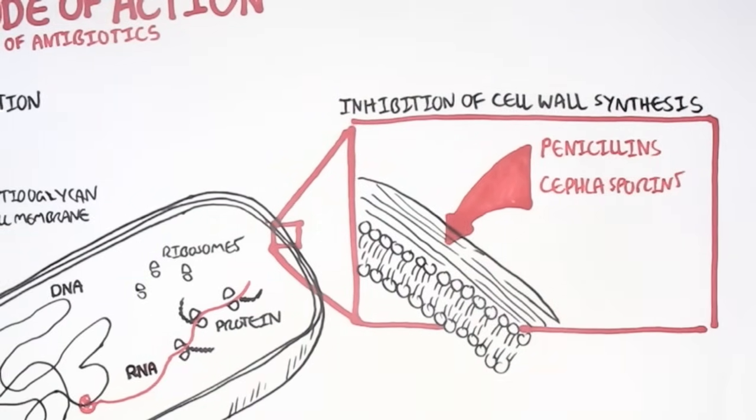All these drugs have different mechanisms of action when it comes to inhibiting cell wall synthesis. A good thing about these drugs is that they won't affect human cells because human cells do not have peptidoglycans. We do not have cell walls.